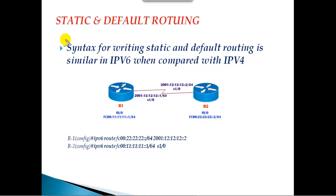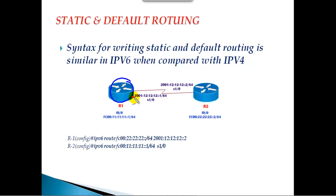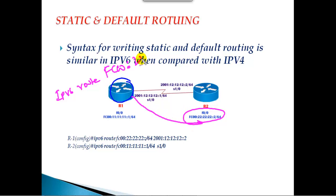The concept of static routing is exactly the same as in IPv4, so I won't go into detail on that. The syntax for writing a static route and default route is very similar in IPv6 compared to IPv4. For example, on Router 1, to write a route for Router 2's LAN interface, we use the command 'ipv6 route' followed by the destination network ID — here it is FC00:22:22:22::/64.